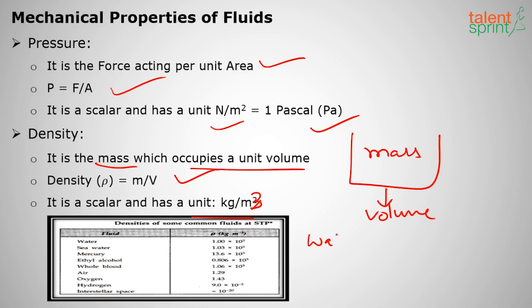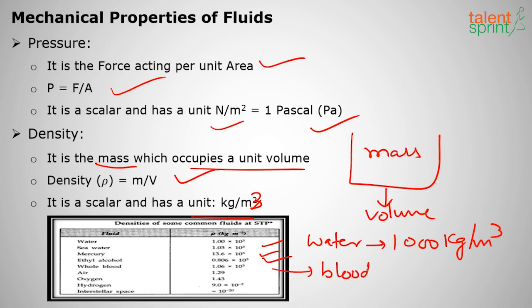The density of water is 1000 kg/m³. If an object's density is less than water it floats; if more, it sinks. Wood floats because its density is less than water. Mercury has a density of 13.6 × 10³ kg/m³, ethyl alcohol 0.8 × 10³, whole blood 1.06 × 10³, and air 1.29 kg/m³.